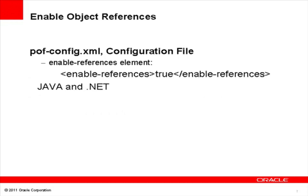By default, object references are disabled due to the overhead incurred in keeping track of object identities and references. To use object references, we need to enable it. There are two ways to do so. You can use the enable references element in PuffConfig configuration file, but this method is only available to Java and .NET because C++ does not use a PuffConfiguration file.